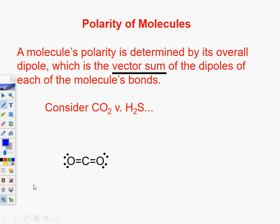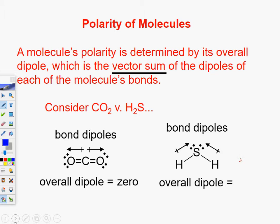So vector sum, take a look. Got these two things. Bond dipoles are going to go out. Bond dipoles are going to go in. Overall dipole, zero. Overall dipole is going to be, that and that, which makes up. Everything we just talked about. There it is. Non-polar and polar.